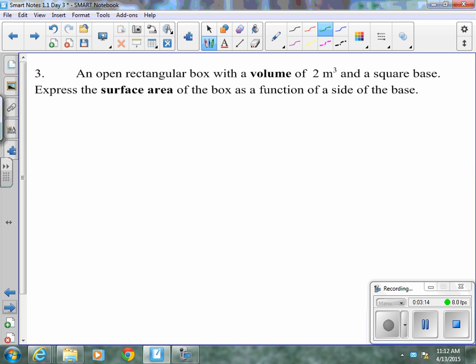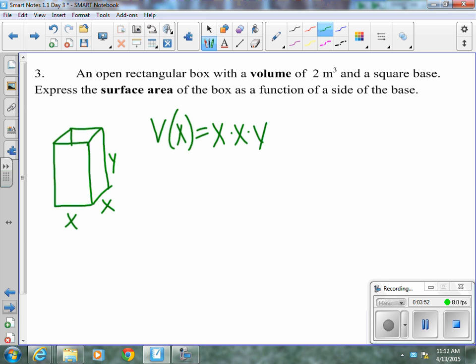Next one, an open rectangular box with a volume of 2 meters cubed and a square base, express the surface area of the box as a function of the side. So we have a box and it's open top, meaning there is no top. They want us to express the surface area as a function of the side of the base. So let's label our base. It has a square base, so we know both of those sides are X. We'll call our height Y.